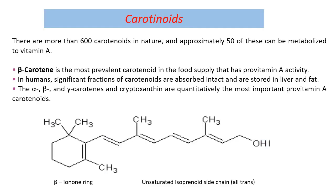There are approximately 50 carotenoids that can be metabolized to vitamin A. Among these, beta-carotene is the most potent and most prevalent, having pro-vitamin A activity. Beta-carotene can be taken through food and stored in the liver and fat. In a well-fed state, vitamin A deficiency is unusual because pro-vitamin A stored as beta-carotene can be converted to vitamin A as needed. The most important pro-vitamin A carotenoids are alpha, beta, gamma carotene and cryptoxanthin.